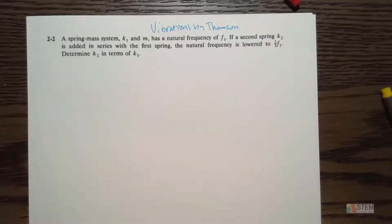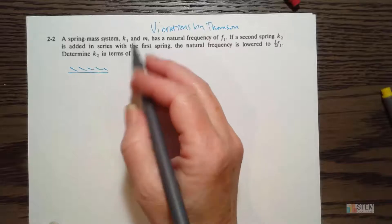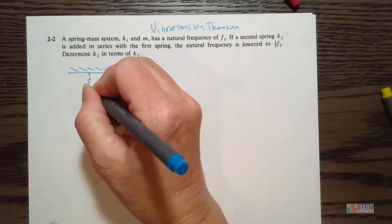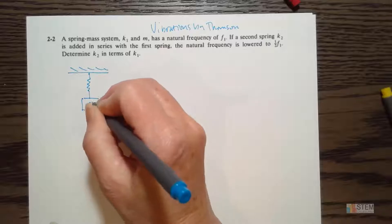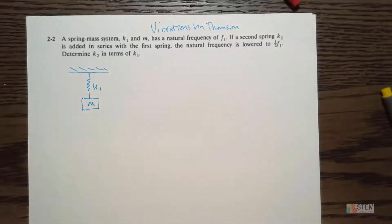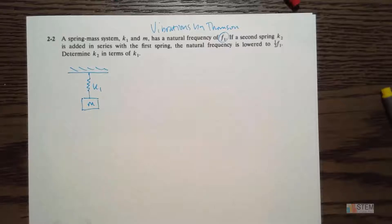First thing we need to do is let's draw out the original system. We know it's one spring, one mass. So let's put it like this. There's k1 and m, and I'm looking at frequencies because we've got this f1.